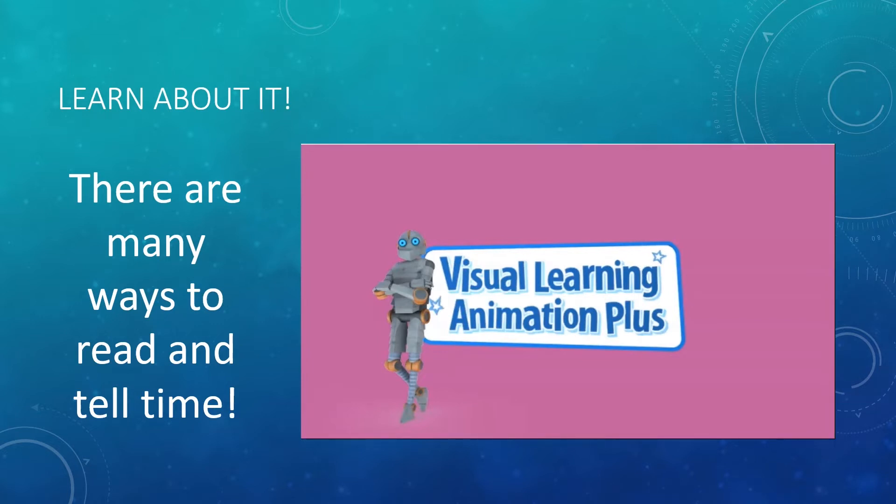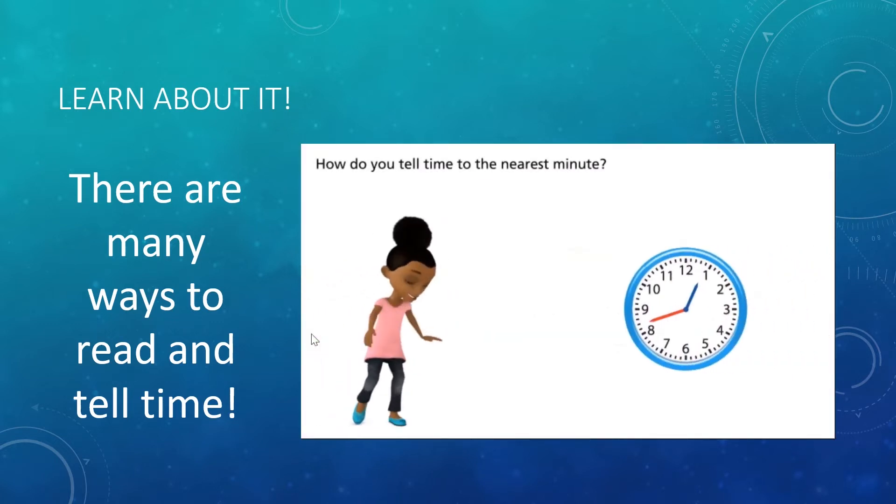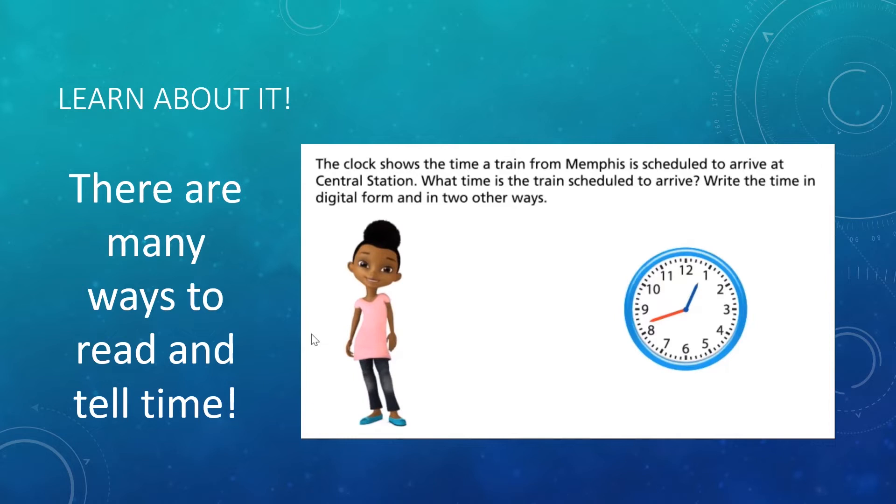Let's check in with Pearson to see what they have to say about time to the minute. How do you tell time to the nearest minute? Let's find out. The clock shows the time a train from Memphis is scheduled to arrive at Central Station. What time is the train scheduled to arrive? Write the time in digital form and in two other ways. Before we move any further, take a look at that time and estimate what time you think it is.